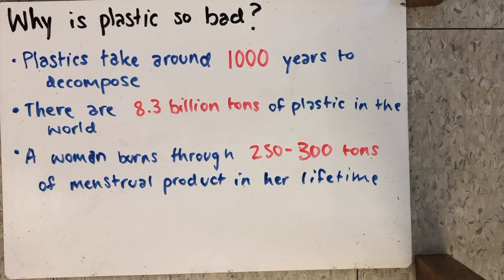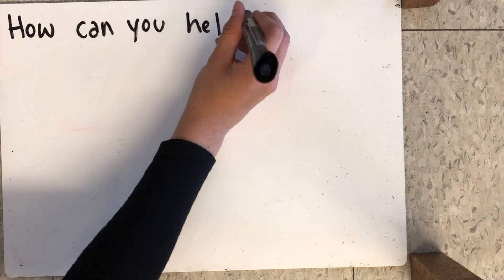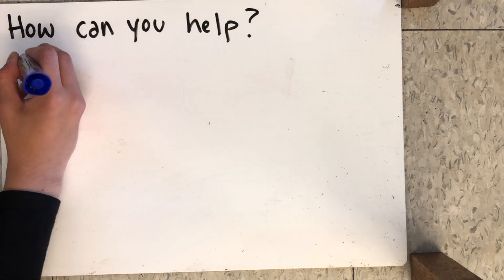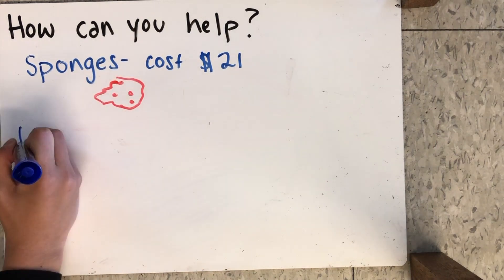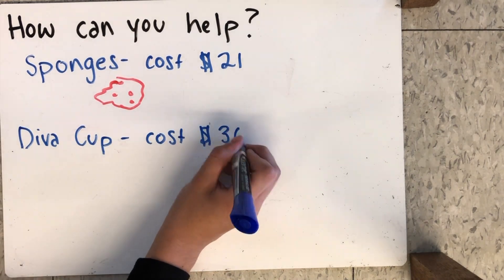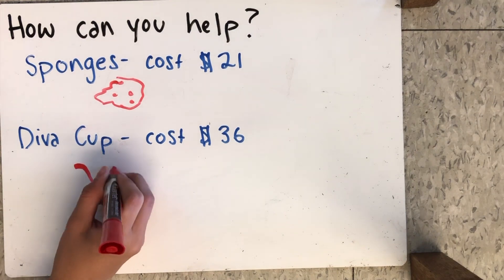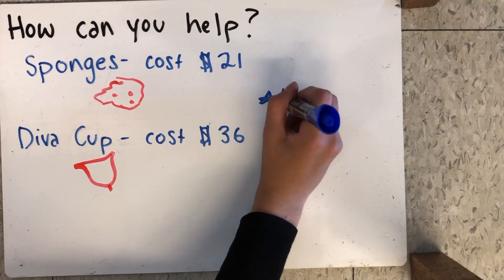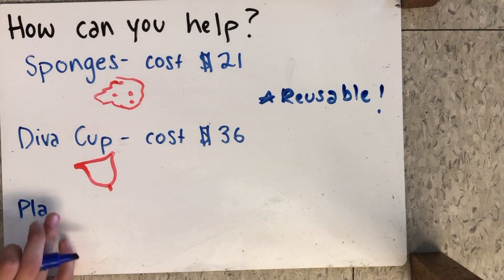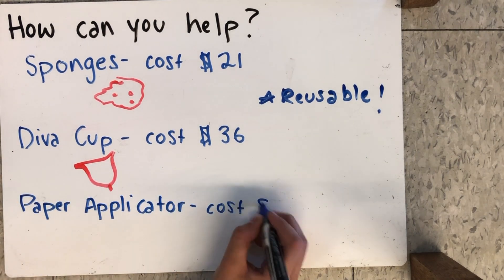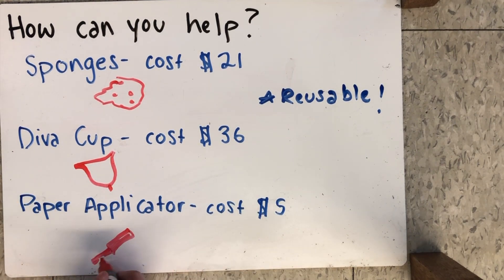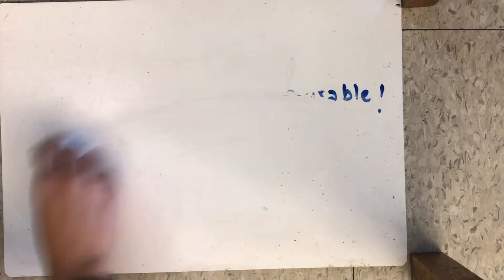Luckily, there are other things you can use. There's always the option of menstrual sponges, which cost around $21, but are reusable for up to 6 months. There's Diva Cups, which cost $36, but are reusable for way longer than 6 months. Finally, there's a less reusable option, which are paper applicators, usually made out of cardboard. These cost around $5 and act the same as plastic applicators. There are many options that are easy and affordable. If you can, try them out.